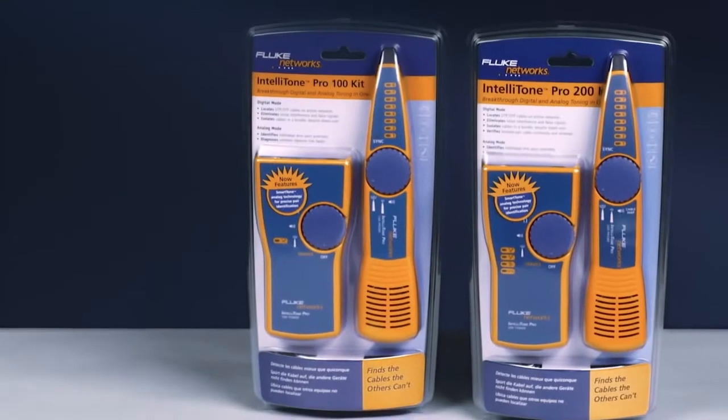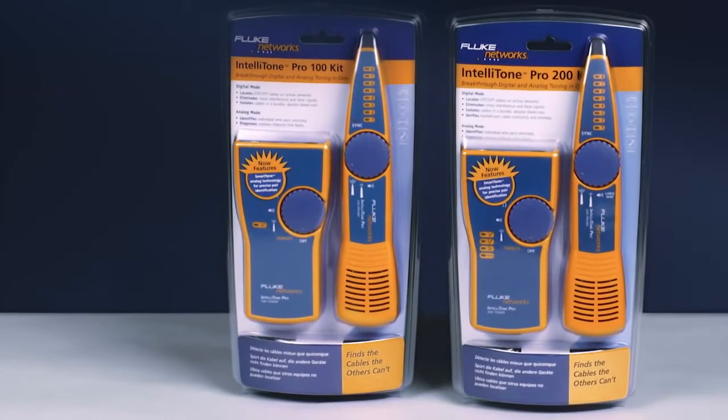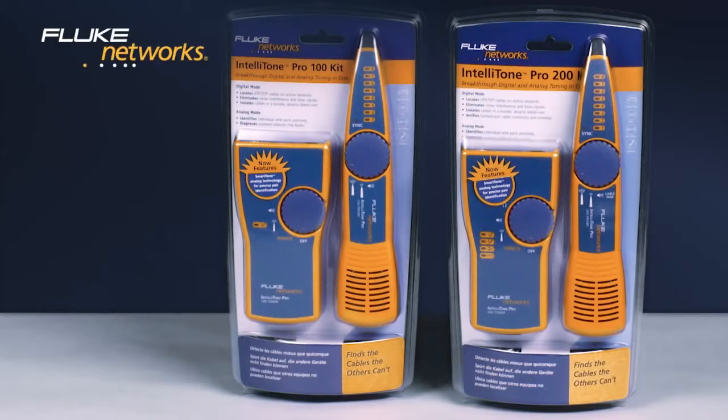Find cables the others can't. Get the IntelliTone Pro from Fluke Networks. There are two different models to choose from. The IntelliTone Pro 100, designed for single-line telco applications, and the 200, used for two-line applications and includes a jack on the probe for wire mapping.